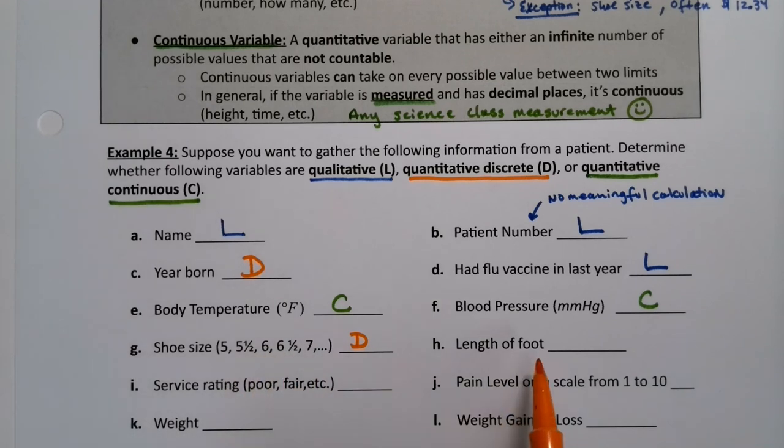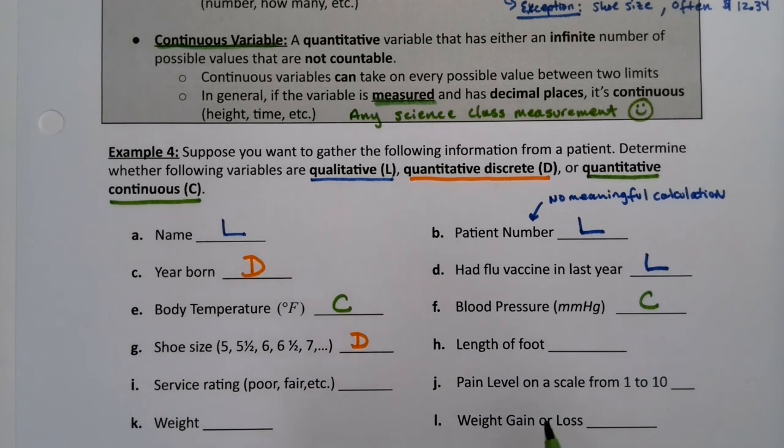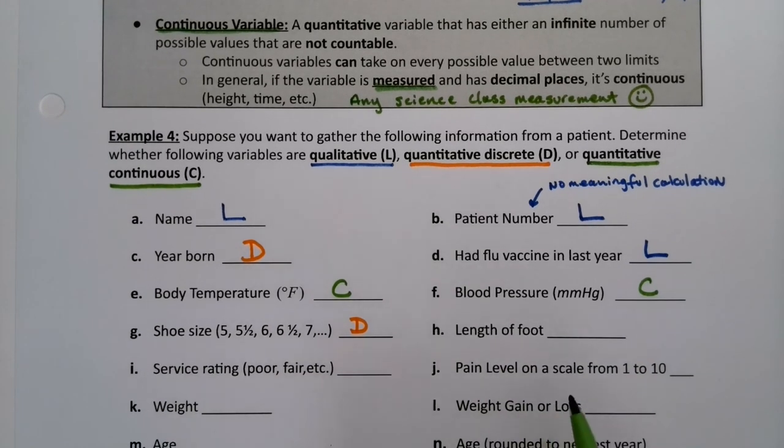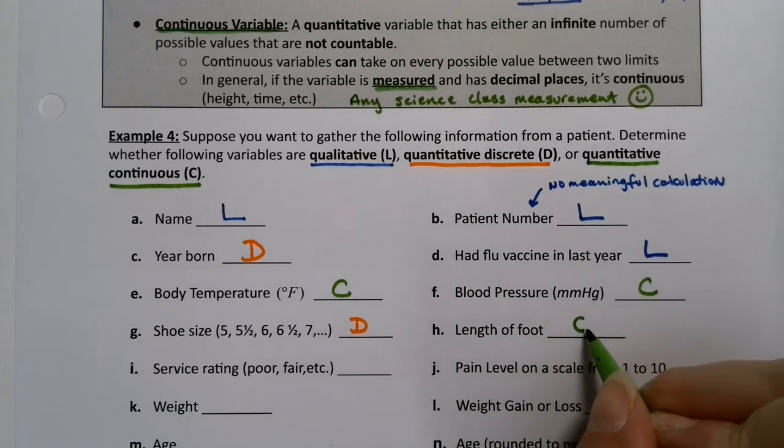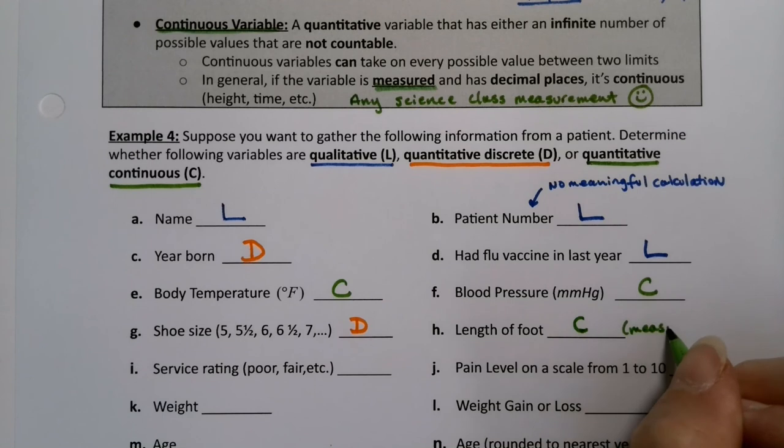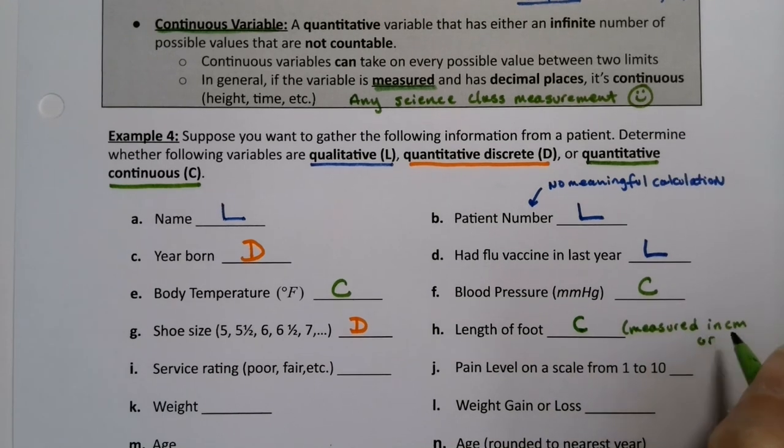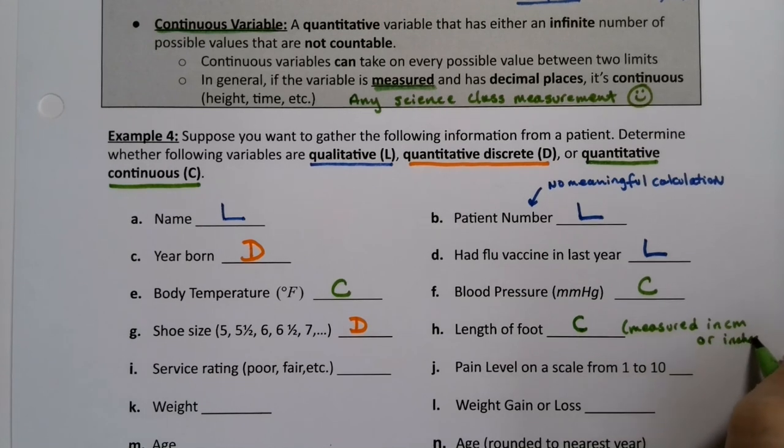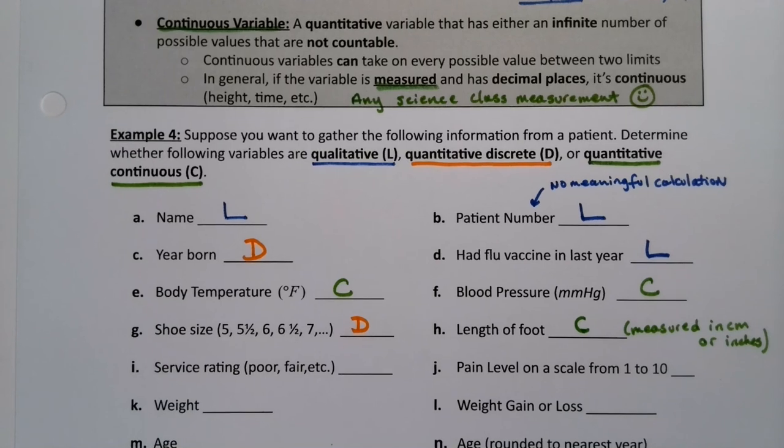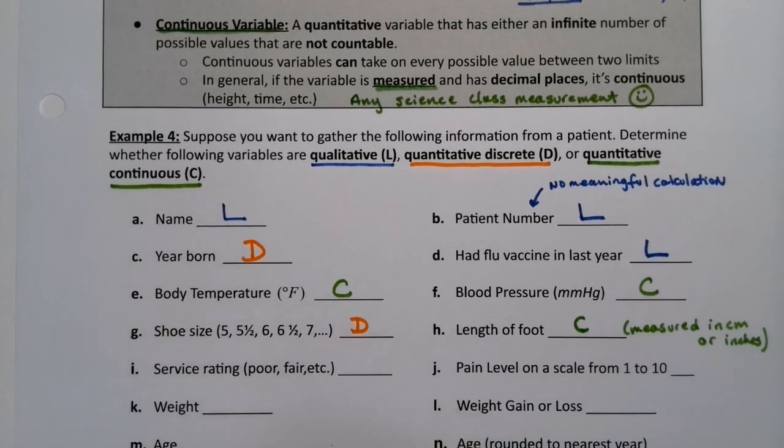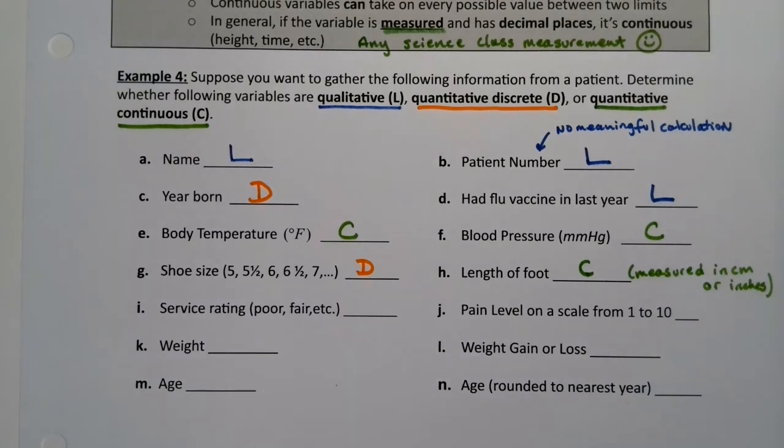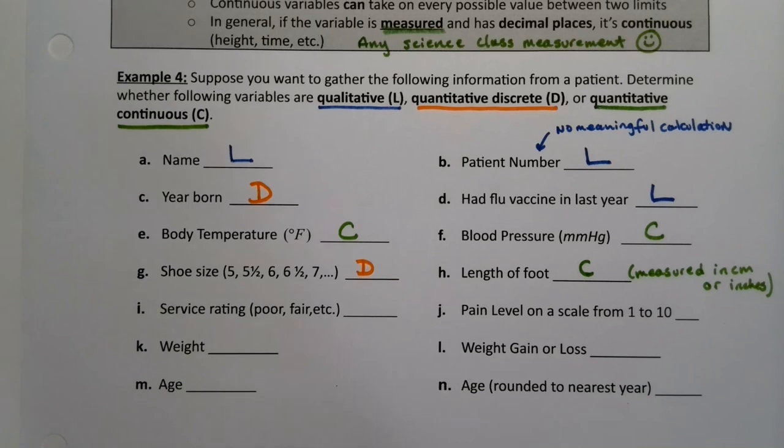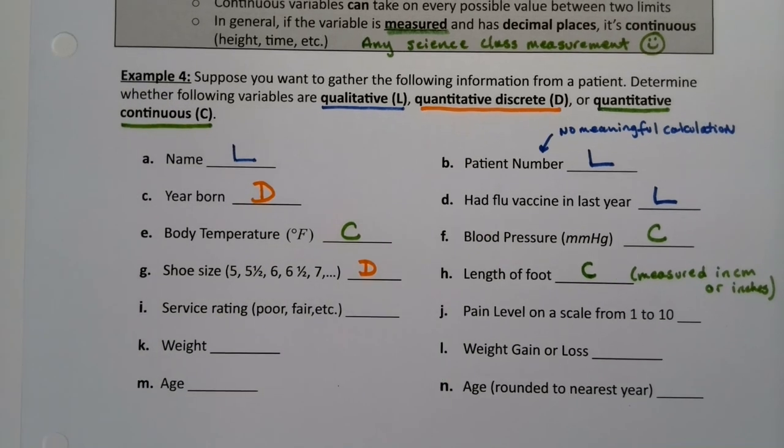Now, that's in contrast to the length of your foot. If I have you step on that little device that they have you step on at the shoe stores, and I measure the length of your foot in centimeters or in inches, that would be continuous. Because it's a measurement in centimeters or inches depending on what country you're in. You can get more accurate if you just have a better measuring tool. So your length of your foot might be, who knows, 10.362 inches. So if I get a better tool, I could be saying, oh, it's 10.362512 inches. So better tool means more decimal places, which means it's continuous. Anything you measure is continuous.